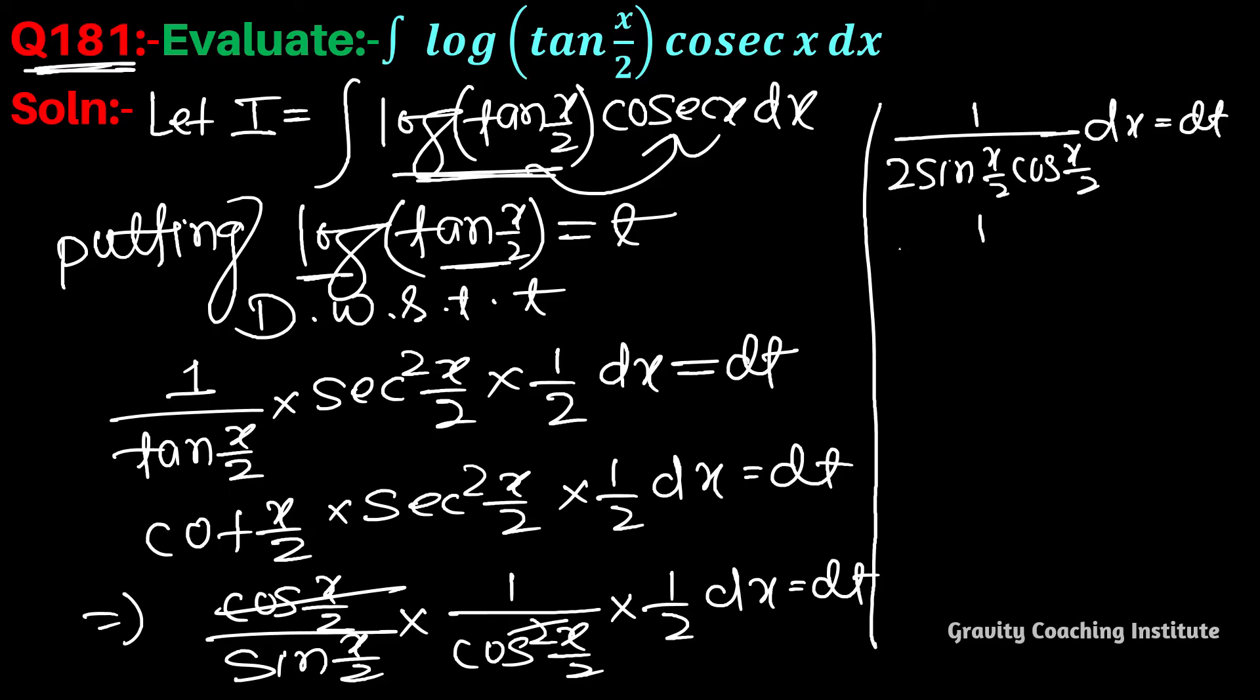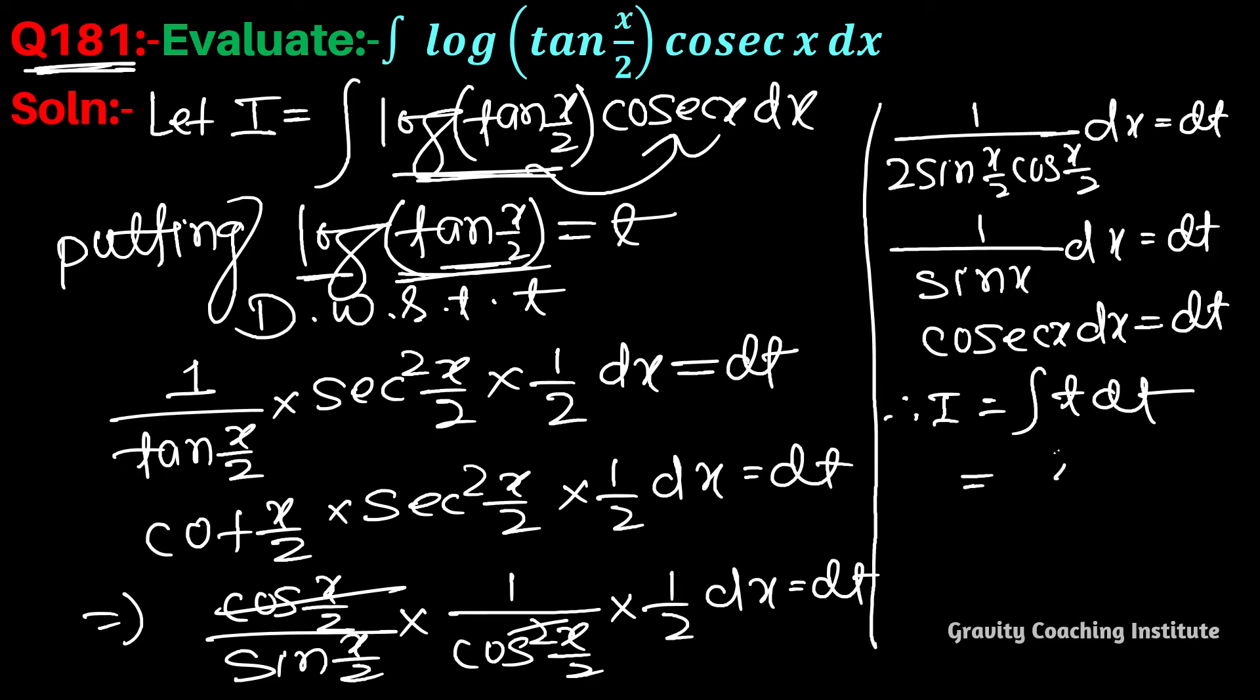Using the formula sin(2θ) = 2sin(θ)cos(θ), therefore I = ∫ t dt = t²/2 + c, which is (1/2)[log(tan(x/2))]² + c.